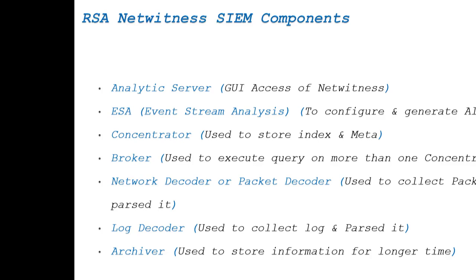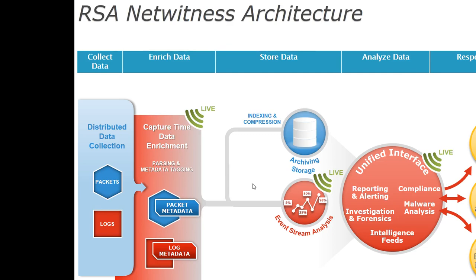There are one or two more components, but they are not relevant to this topic and will be discussed later. Now I'll move on to the logical architecture of the RSA NetWitness solution. The first layer is 'Collect Data,' where the Log Decoder or Packet Decoder is responsible for collecting either logs or packets from different devices. The second layer is 'Enrichment of Data,' where devices perform parsing and create an index for that data. The third layer is 'Store Data,' where if you use the Archiver, data is stored there; if you have ESA, it stores relevant logs for alert generation. The fourth layer is 'Analyze Data,' similar to the Analytics Server, responsible for creating reports, dashboards, and investigation.